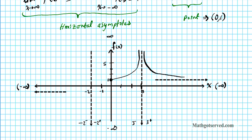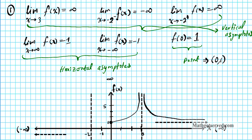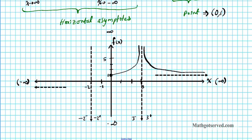Now let's shift attention to the negative region of our coordinate system. As the function approaches negative 2 from the right side, the function heads towards infinity, so we curve it upward heading to infinity. On the left side of negative 2, as the function approaches negative 2 from the left, the function tends towards negative infinity — it shifts downward as it approaches the vertical asymptote from the left. Then as x approaches negative infinity, the function approaches negative 1, which is the other horizontal asymptote.